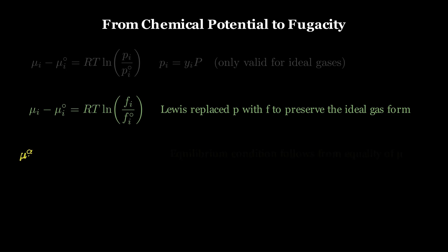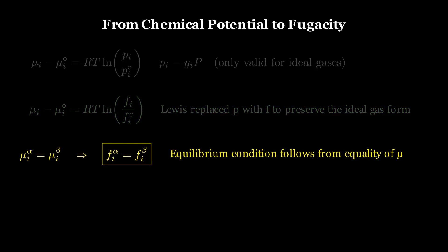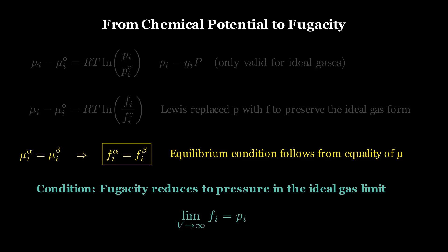From this new definition, we recover a key property. The condition for equilibrium can now be expressed directly in terms of fugacity. This is derived from the chemical potential, not as a new assumption, but as a consequence. However, one crucial condition remains. In the limit of ideal gas behavior, fugacity must approach the actual pressure. This ensures we preserve the form of the ideal gas equations, which I will repeat is a completely arbitrary requirement for gases.